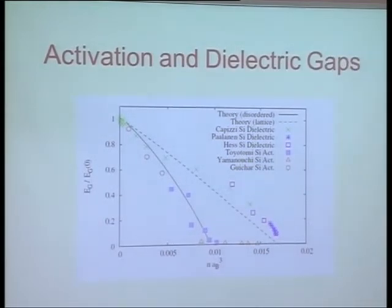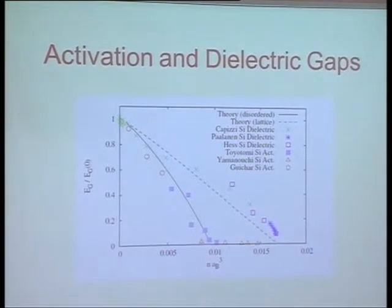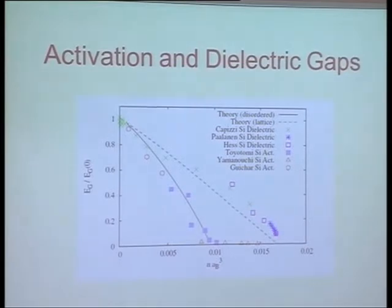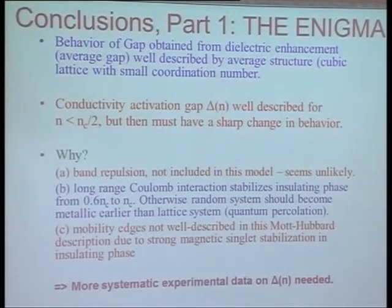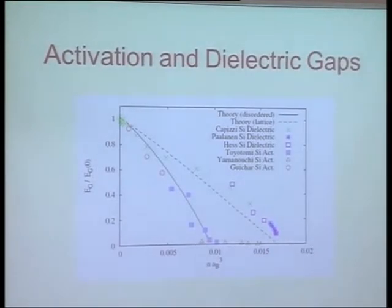But then the data in this regime really needs good data analysis. These are classic experiments that don't need very, very low temperatures. All you need is samples. The dielectric constant is basically from the optical data.